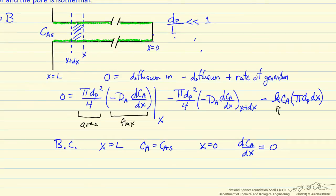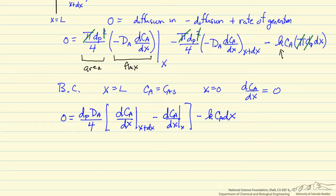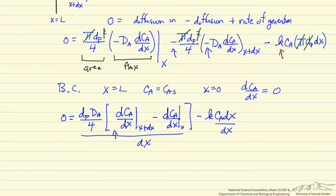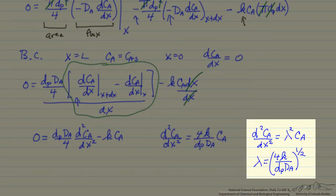We can now simplify the material balance. First, cancel the π terms and one of the diameter terms, then combine the first two terms. Factoring out common terms, the negative times negative makes that term positive. Dividing both terms by dx, we recognize a derivative, leading to a second derivative. We rearrange so the second derivative is on one side, and define a new variable λ² — written as lambda squared — to simplify manipulation.